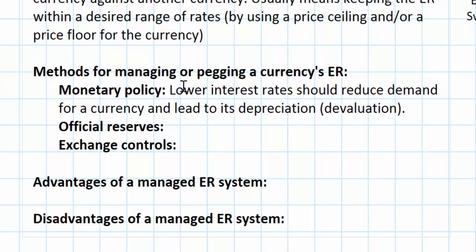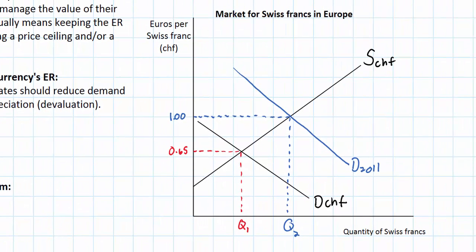Let's look at the intended consequences of the lower interest rates the Swiss National Bank imposed in 2011 in the market for Swiss francs in Europe. While demand had risen for most of the previous three years, lower interest rates were meant to reverse that increase. Lower interest rates would reduce the attractiveness of Swiss assets to foreign investors and in theory reduce the demand for Swiss francs — I'll call this DIR down. If the interest rate falls, demand for Swiss francs should fall and the currency should weaken.